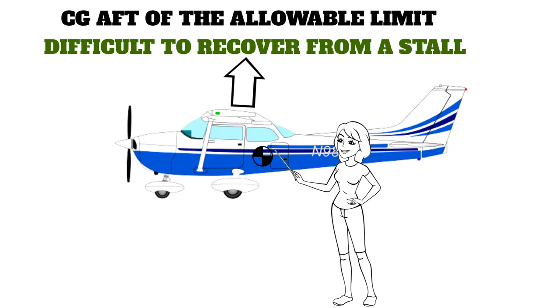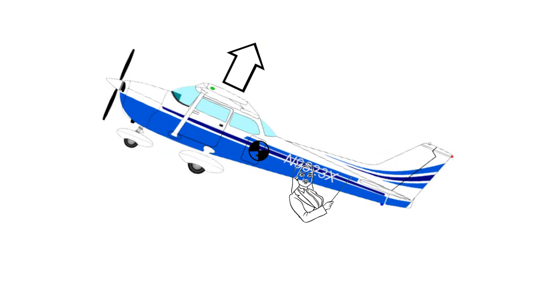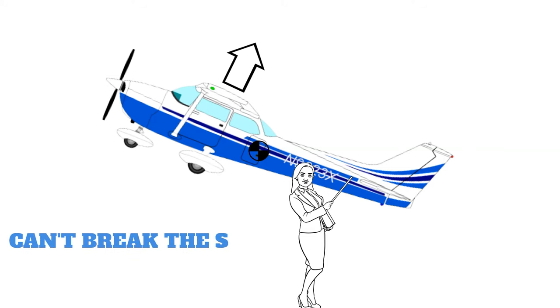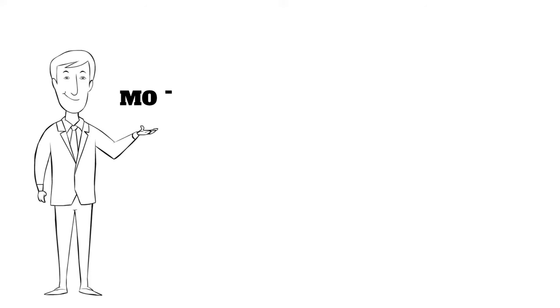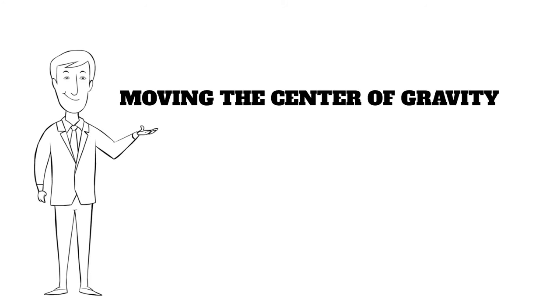This could make it really difficult to recover from a stall. That's because the elevators may not have enough control authority to pitch down and break the stall by reducing the angle of attack. So you can see that the first way we affect controllability in the airplane is by moving the center of gravity.